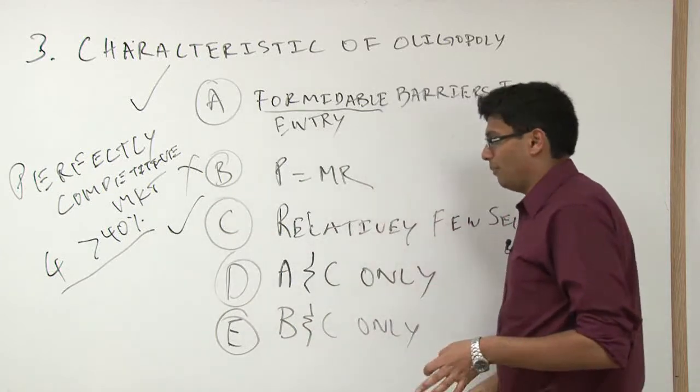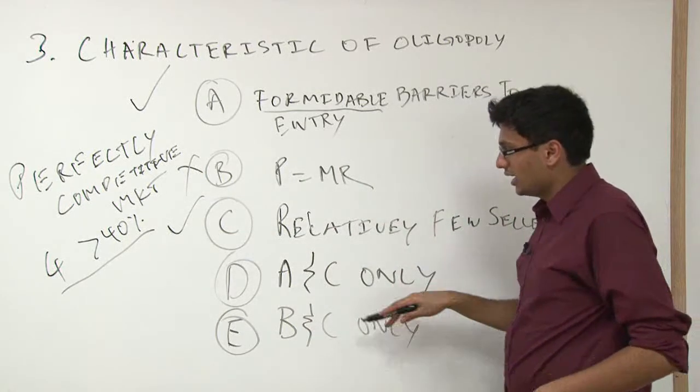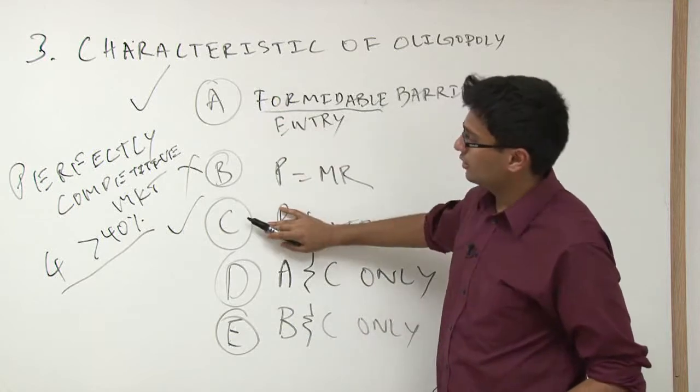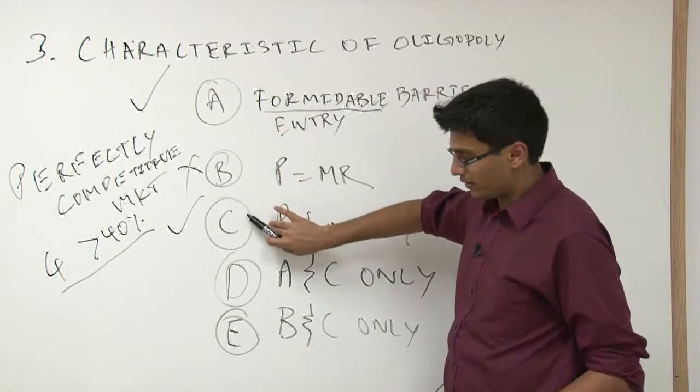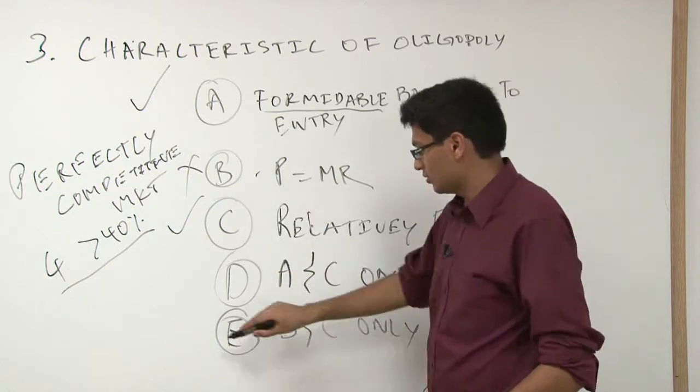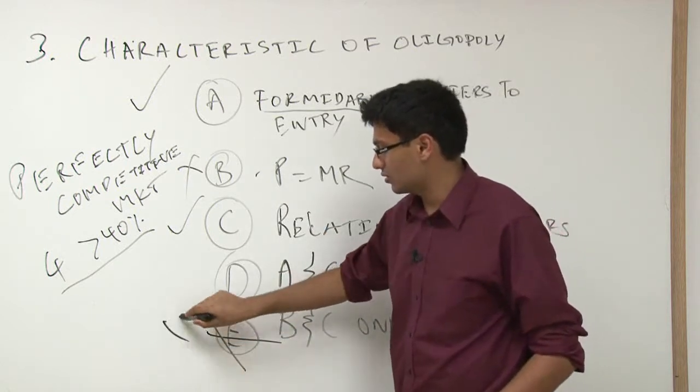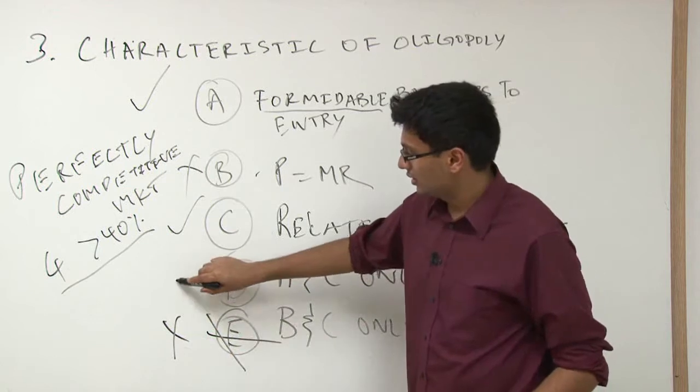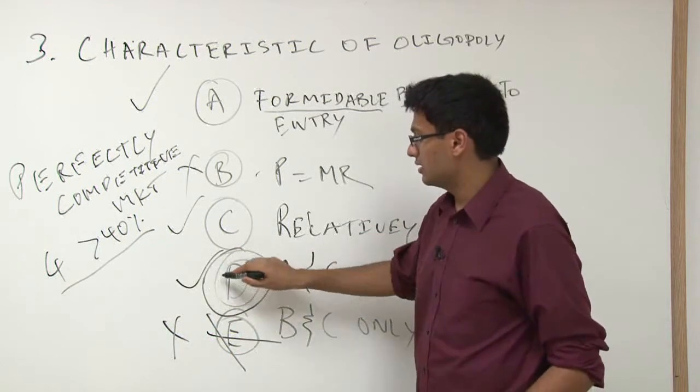Well, now is the tricky part. They said A and C only, so yeah, that's true, A and C both are correct. Or B and C only. Well, C is true, but B isn't. So this is not true, E isn't true. So in fact, the answer is D.